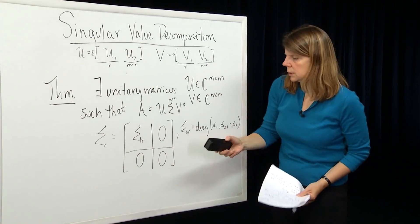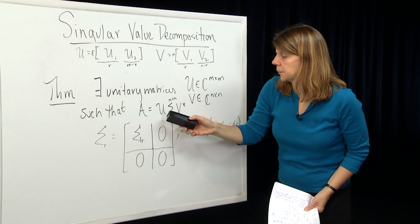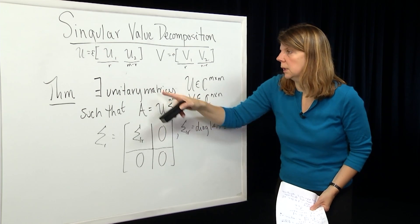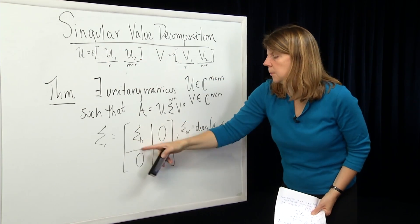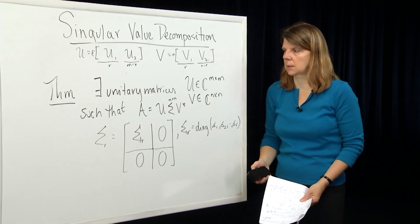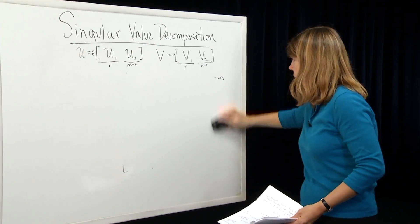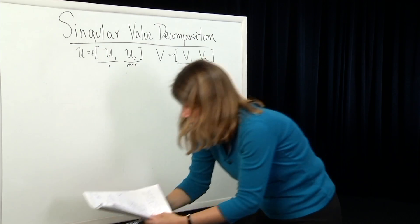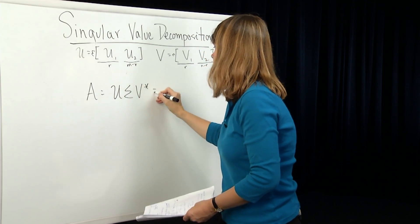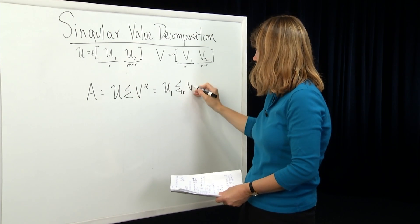This is just a naming convention, but you can start to see why we're doing this. When we look at the representation A = U Σ V*, post-multiplying U by Sigma will just pull out the piece of U that multiplies Sigma, because the rest is multiplied by the zero elements in Sigma. So we can show that A = U Σ V* simplifies to A = U1 Σ_r V1*.